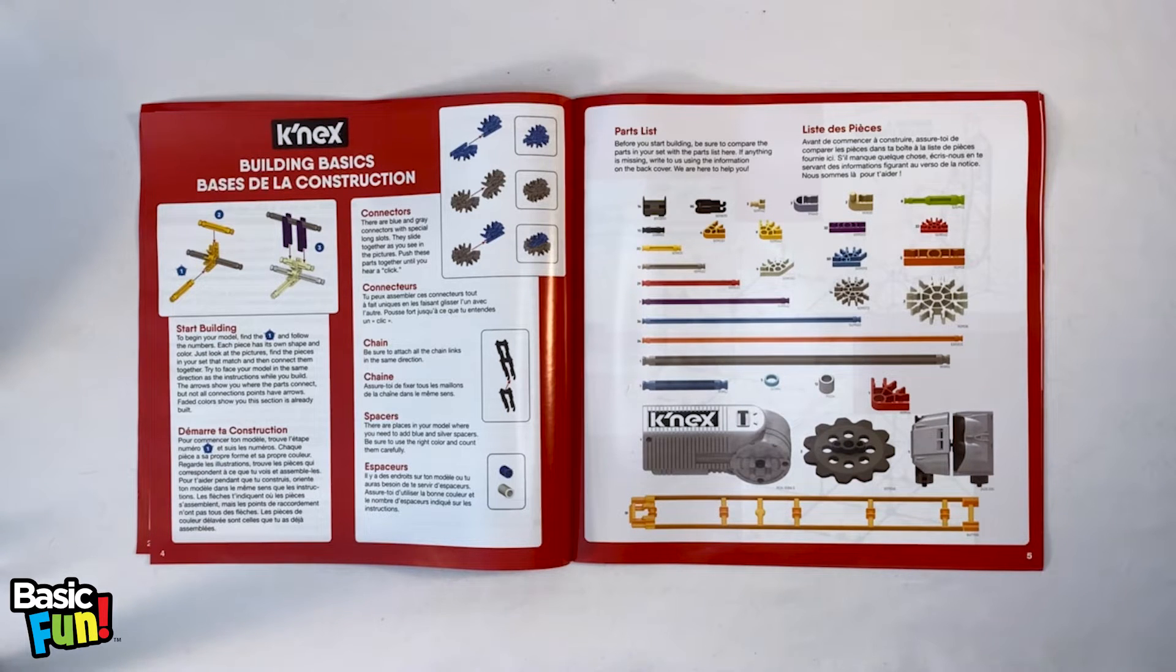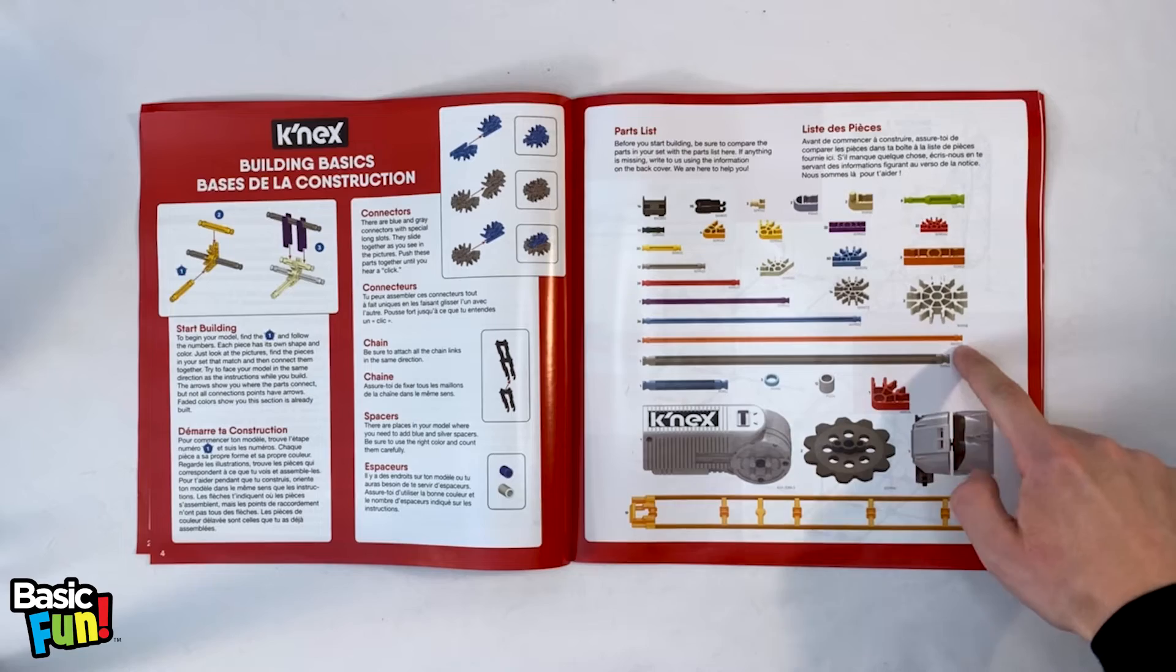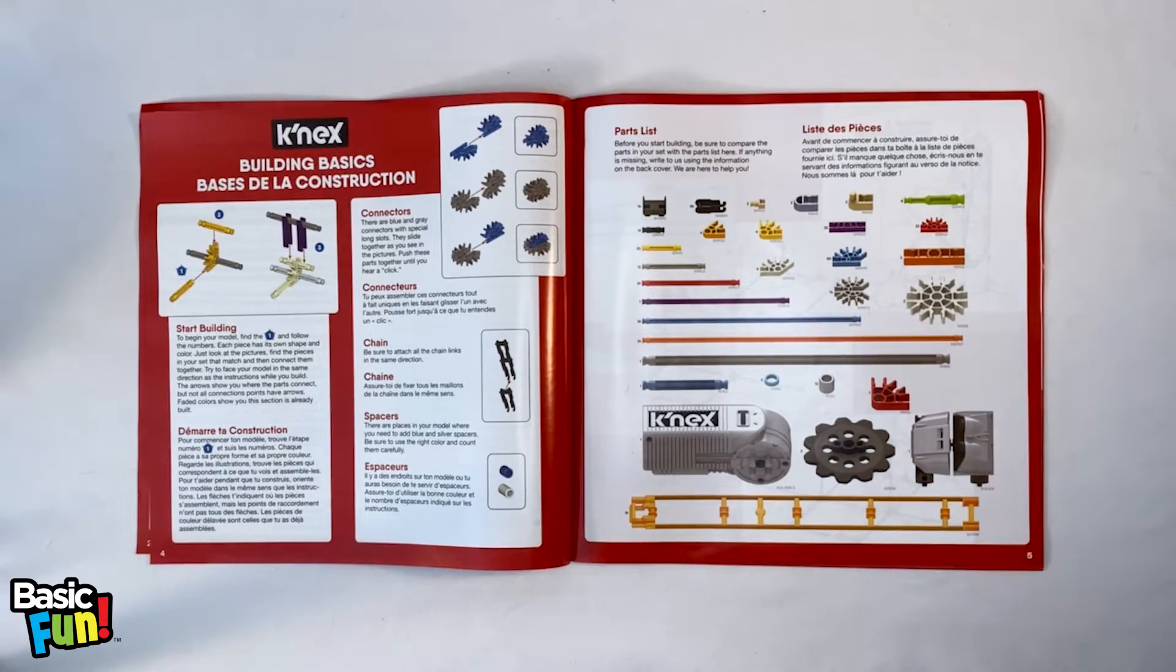If you find that you're missing any pieces, go to the basicfun.com website, support tab, customer support, and then select Connects. In order to request replacement parts, make sure you use these part numbers which are listed below the image of the part.